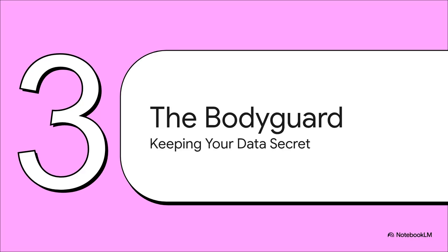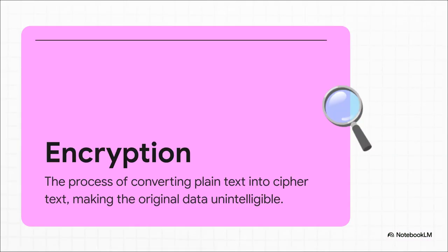Our information has now been collected, but it has to travel across the internet, which is, let's be honest, a pretty wild and public place. It needs protection. It needs a bodyguard. And lucky for us, it has one — its name is encryption. What encryption does is take your perfectly readable address and credit card number and scramble it into complete, unreadable gibberish. This is called ciphertext. The only one who can unscramble it is the intended recipient who has the secret key. To anyone else trying to peek, it's totally useless.